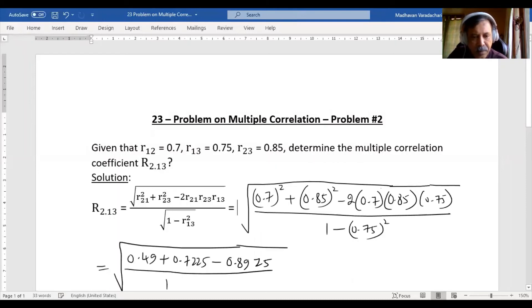...the denominator is 1 minus 0.75 squared, which is 0.5625. So if we evaluate...